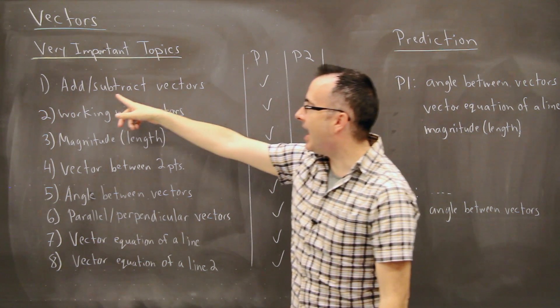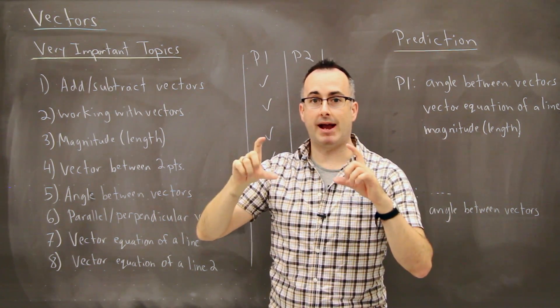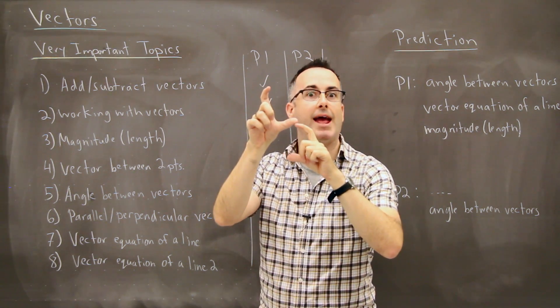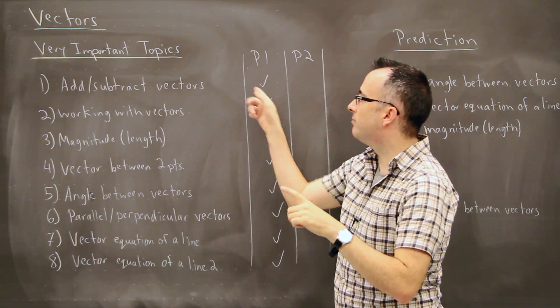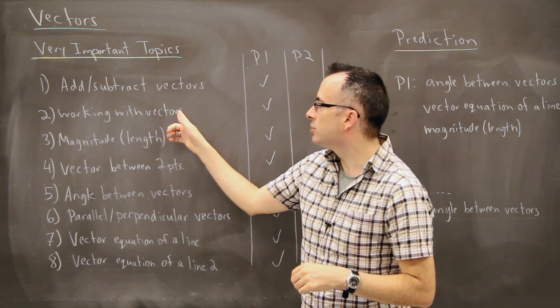So if you look at this one, this first very important topic - adding and subtracting vectors. It helps to be able to move them around by hand. So this is like having a vector, having another vector and learning to add them head to tail. And those show up most often on paper one. We are working with vectors.